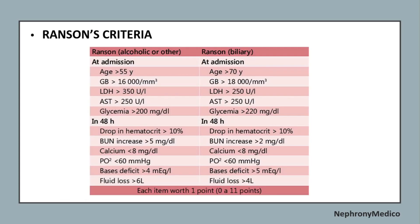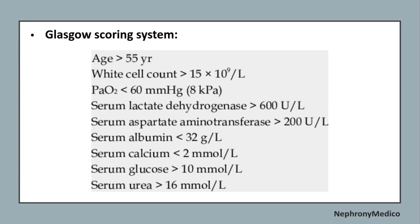Ranson's criteria include admission and 48-hour parameters including age and other variables. The Glasgow scoring system also includes age, white cell count, oxygen saturation, serum lactate dehydrogenase, aspartate aminotransferase, albumin, calcium, glucose, and urea.